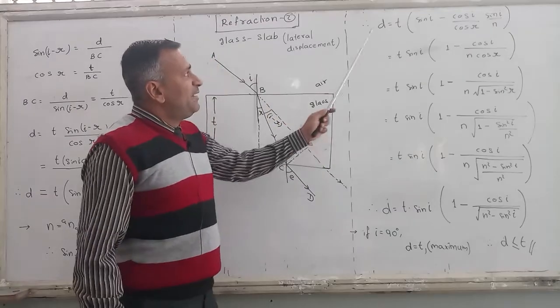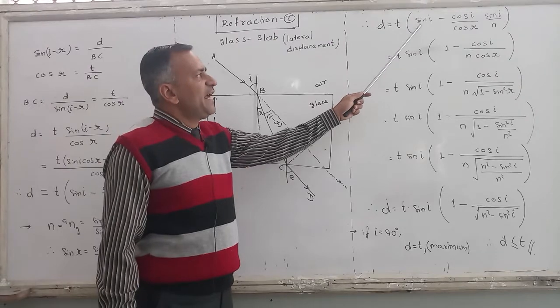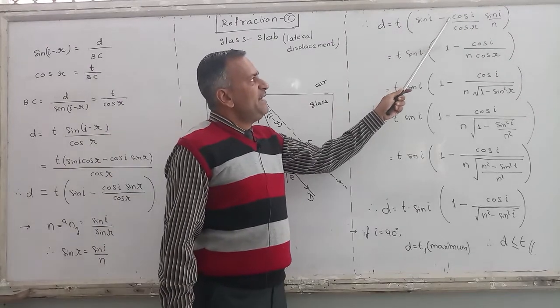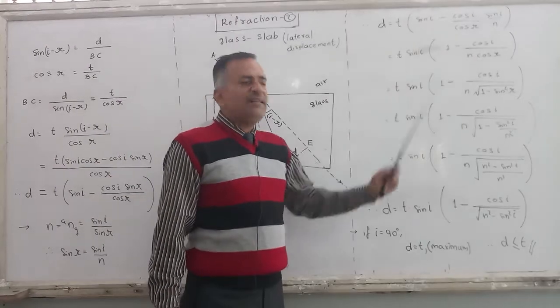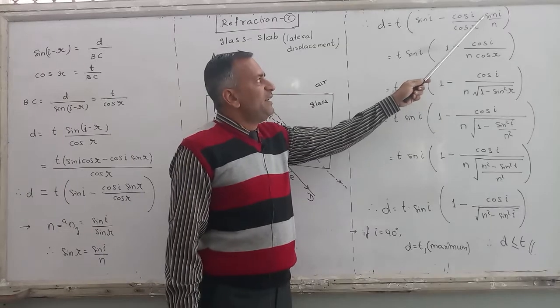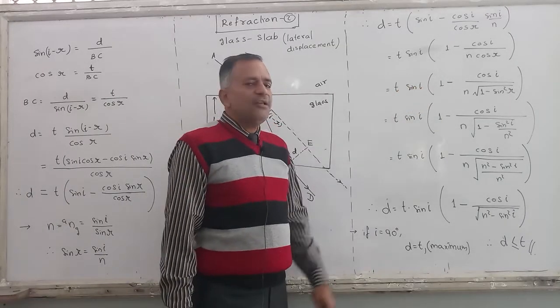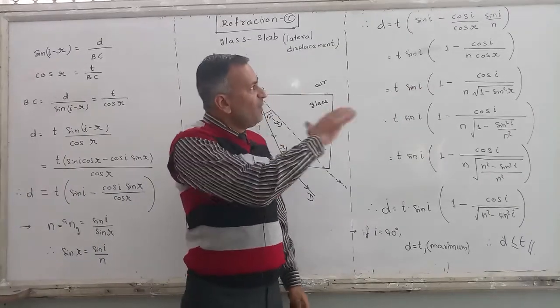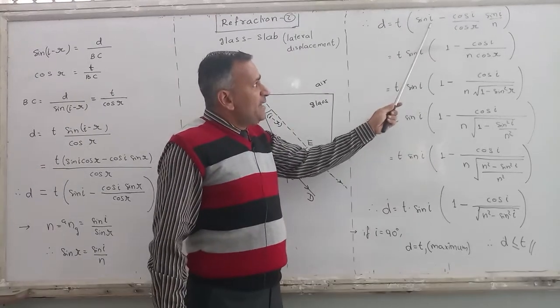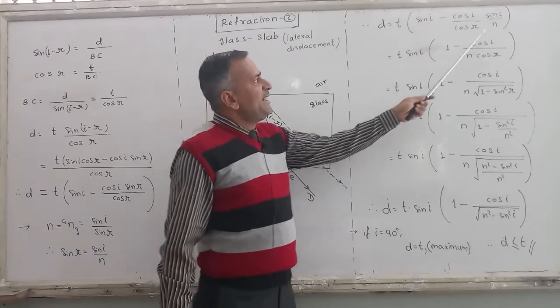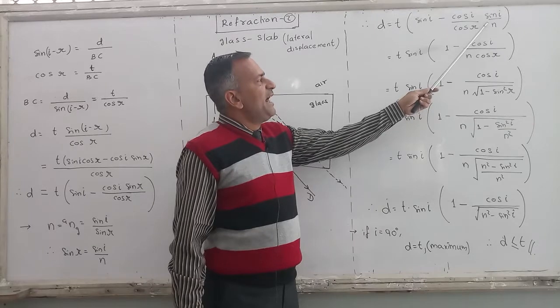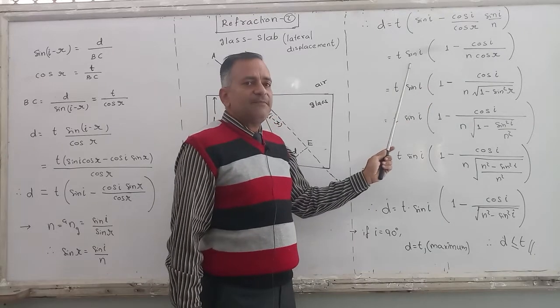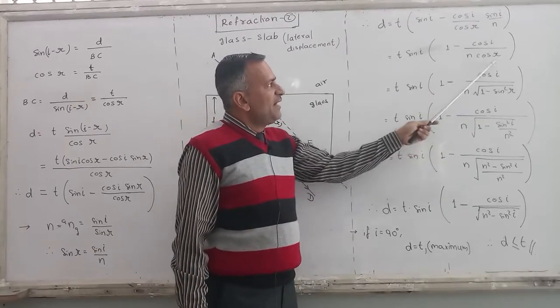The next part: D equals T as it is, sin I as it is, cos I is as it is, cos R is also as it is. Only sin R is replaced: sin I upon N. One replacement is done. Now from here, sin I is in the first term, sin I is in the second term also. Sin I can be taken common outside. What is left? One minus cos I upon N cos R. Cos R has not been eliminated yet, but it will be done easily.